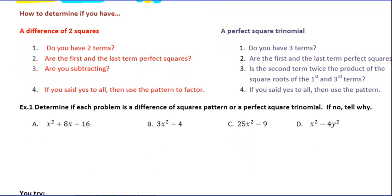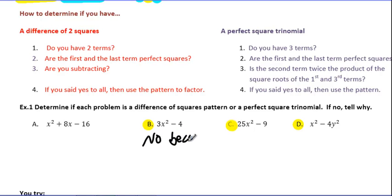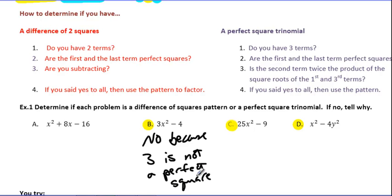So how do you determine if you have a Difference of Squares or a Perfect Square Trinomial? The first thing is a simple count of terms. Difference of Squares has two terms. Looking at the examples, B, C, and D each have two terms, so they are possibly Difference of Squares. Next, are the first and last terms Perfect Squares? When I look at B, I see a 3 — that's not a Perfect Square. So this is not Difference of Squares; 3 is not a Perfect Square, and I have no clue what the square root of 3 is.